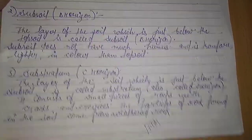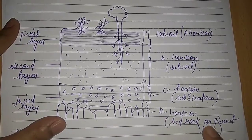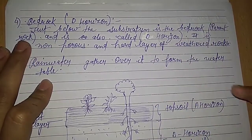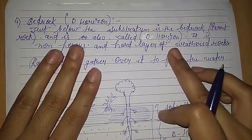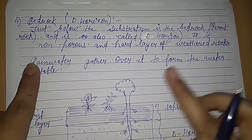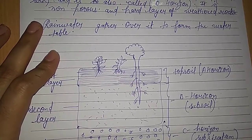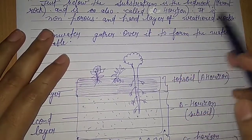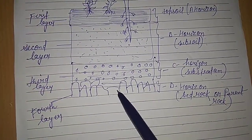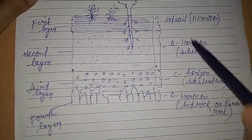The last layer is bedrock, also called parent rock or the D horizon, found just below the substratum. It is a non-porous and hard layer of weathered rock. Rainwater gathers over this parent rock to form the water table. Small particles of rock are found here, formed from the weathered rock.